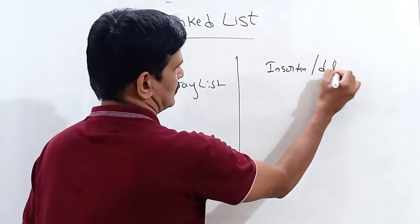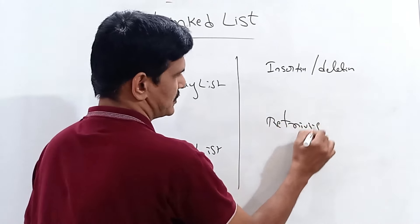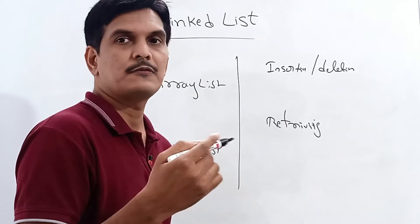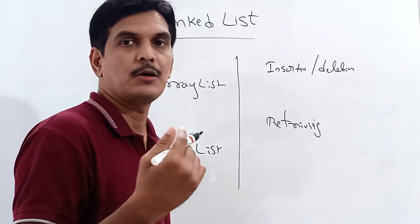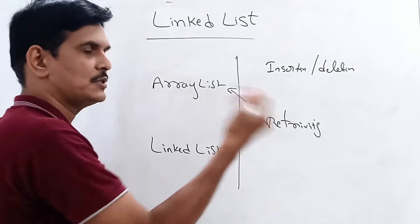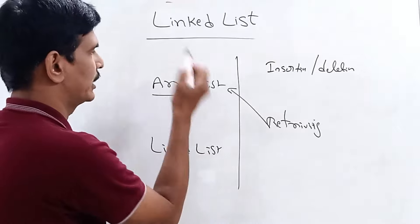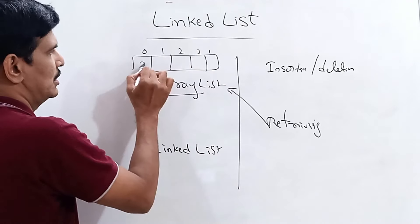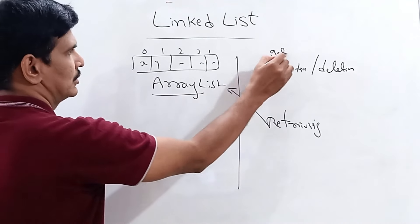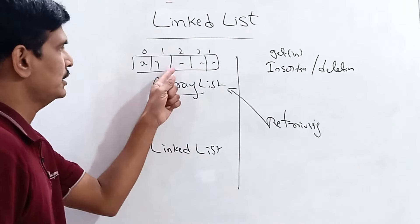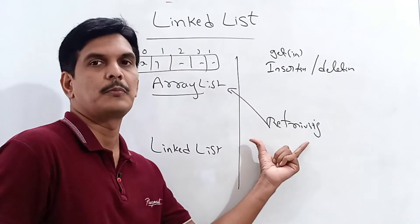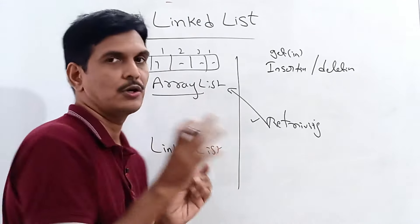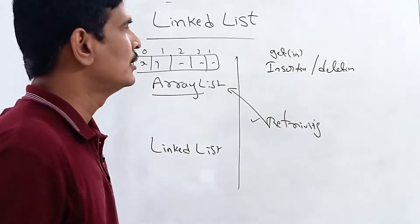If you want to perform frequent retrieval operations — getting elements from the list — then go with ArrayList. In ArrayList, elements are stored by index, so using the get method with an index gives you the element directly. Whenever you have more frequent retrievals, prefer ArrayList. However, do not prefer ArrayList if you have more insertions and deletions.